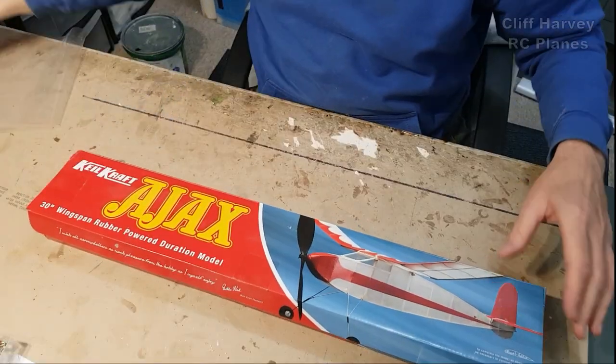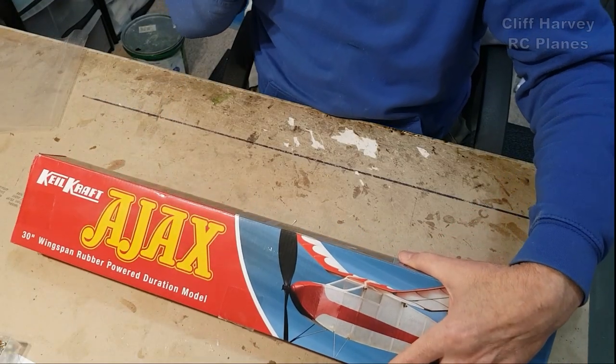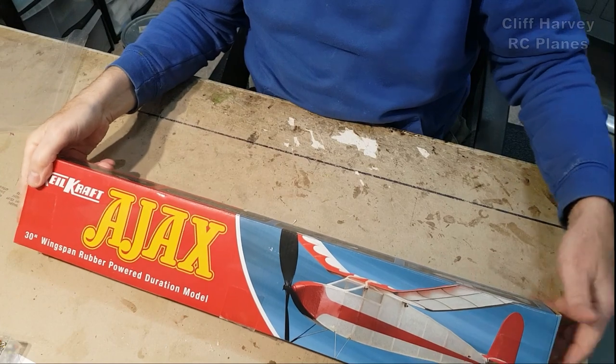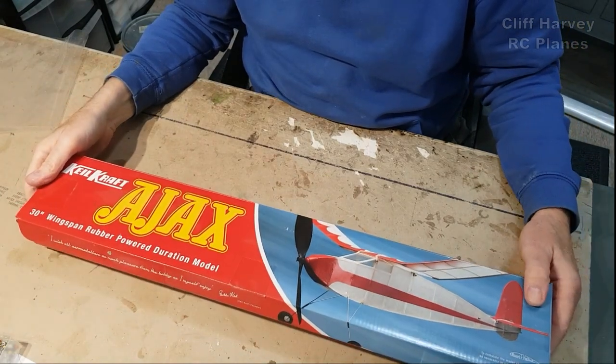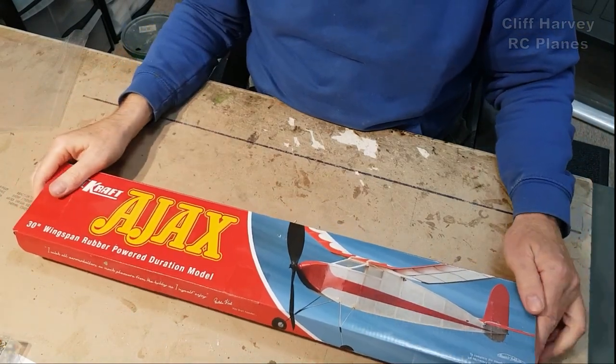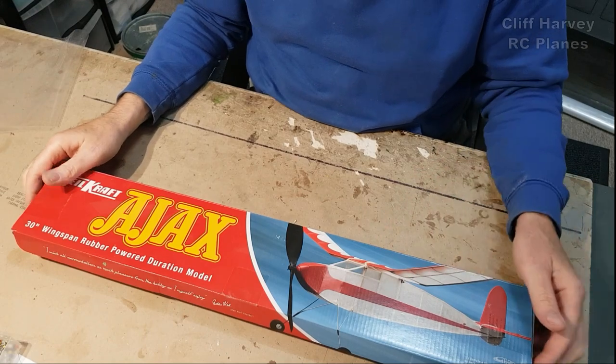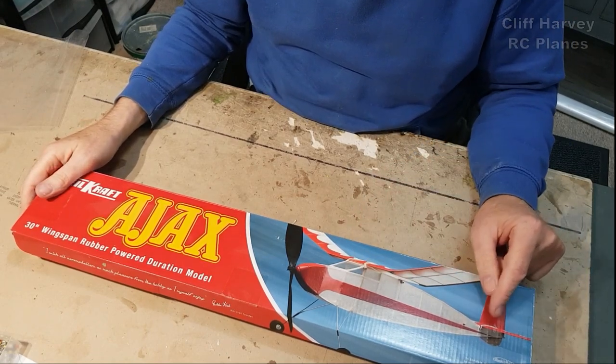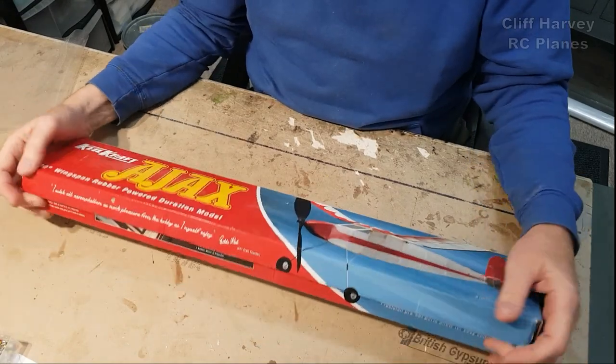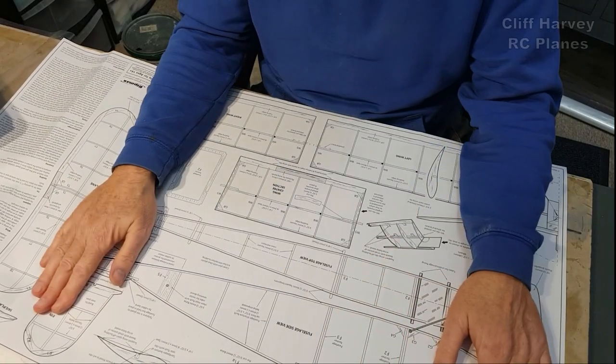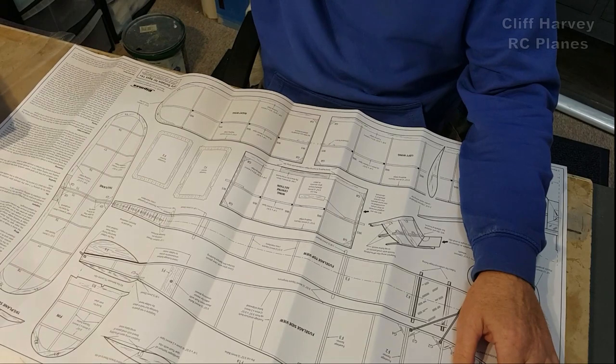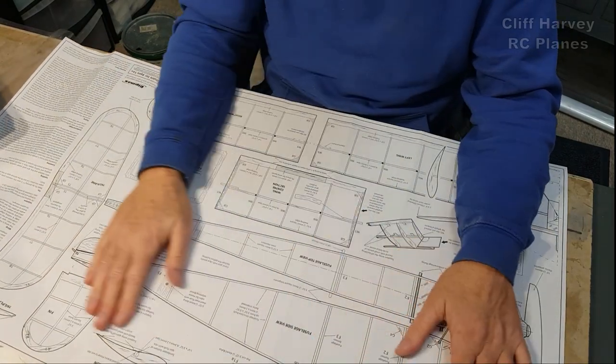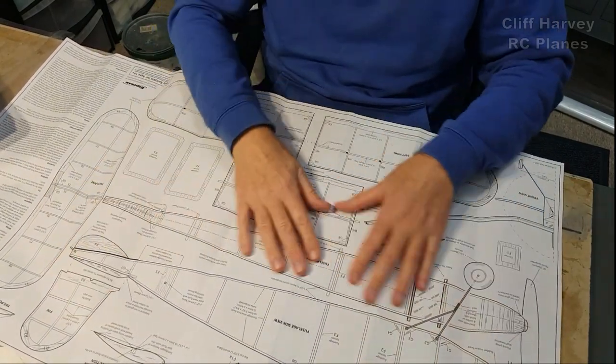So let's have a look inside the box shall we? As I say I think it's 30 inch. This is a classic design. Oh yeah 30 inches. Classic design. It's an under cambered wing. The wing's banded on and so is the tail plane actually. I'm not sure if I'll band the tail plane on or not and would you believe I've got an original Keelcraft Ajax plan in my plan box. I found it and compared it. It's virtually identical.